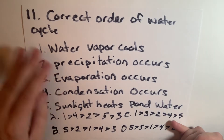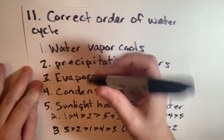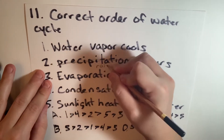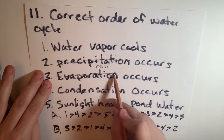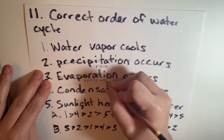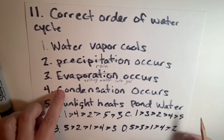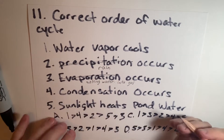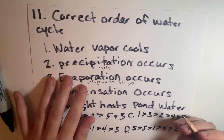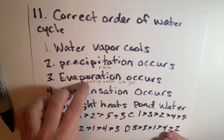We could simplify some of these words to make it a little easier. Precipitation is just a fancy word for rain. Evaporation, which we spoke about earlier, is turning water into gas. Condensation, which we also spoke about earlier, is the water on the outside of a cup. And sunlight heating the pond is going to make the water evaporate.